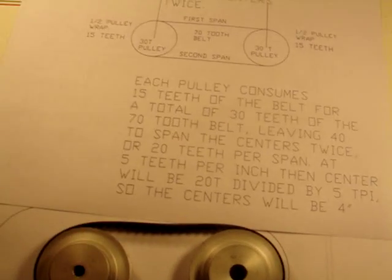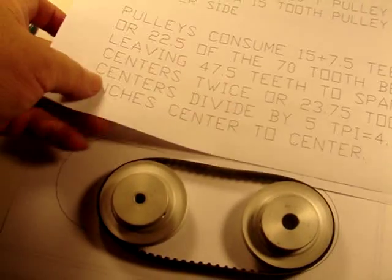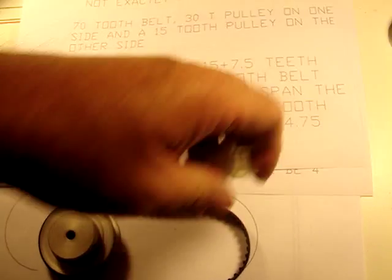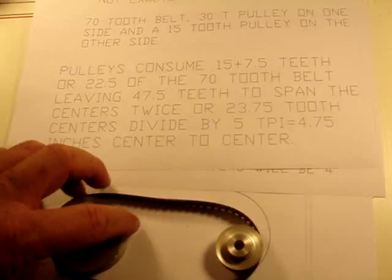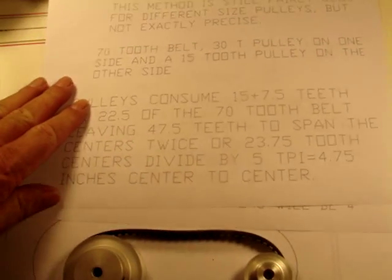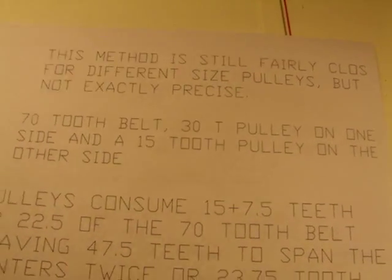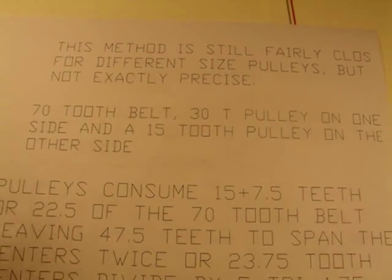So now, with that same kind of calculation, you can do it with two different size pulleys. It's not quite as accurate, but say for example, we use a 15-tooth and a 30-tooth. This method is still fairly close, not exactly precise.